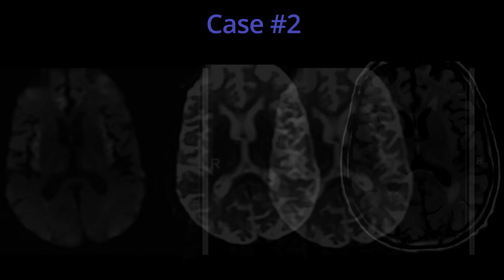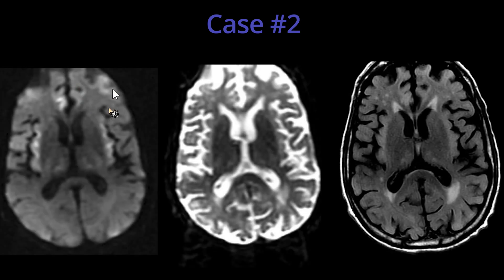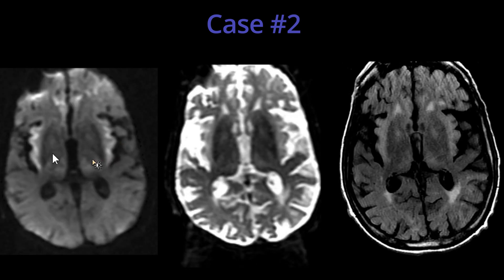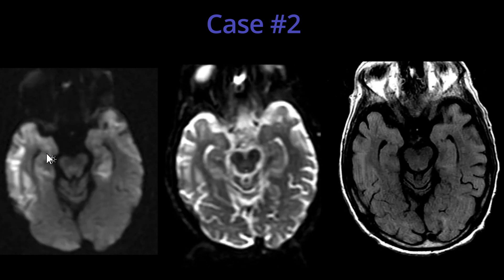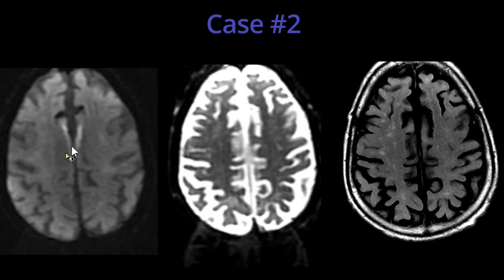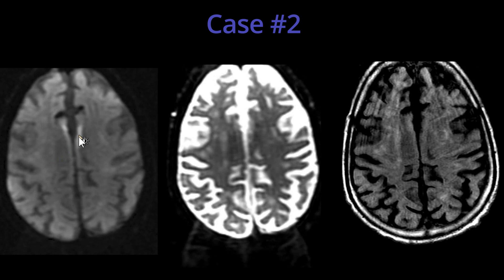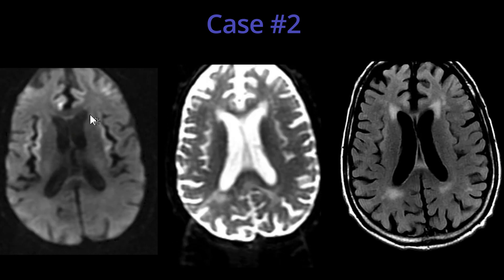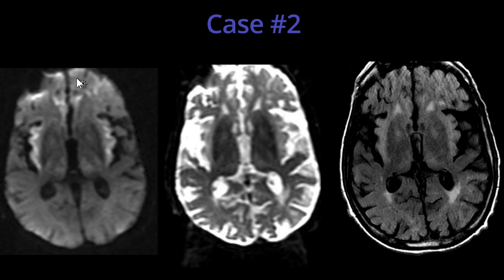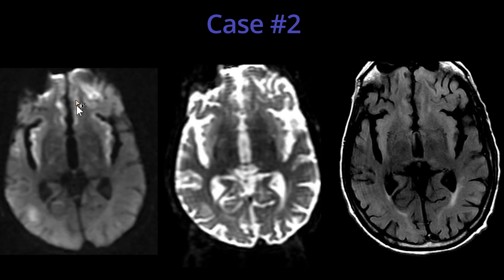In the second case, there were some similar findings, with abnormal restricted diffusion involving bilateral insula as well as the temporal lobes. Additionally, there were areas of restricted diffusion involving bilateral cingulate gyri and the orbital frontal lobes.